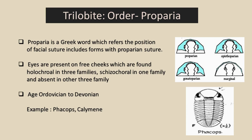In Order Proparia, some families have eyes and some have no eyes. Some families have holochroal eyes and some have schizochroal eyes. Holochroal eyes means the entire eye is covered with a single corneal lens, whereas in schizochroal eyes, every individual lens of the compound eye is covered with its own corneal lens.